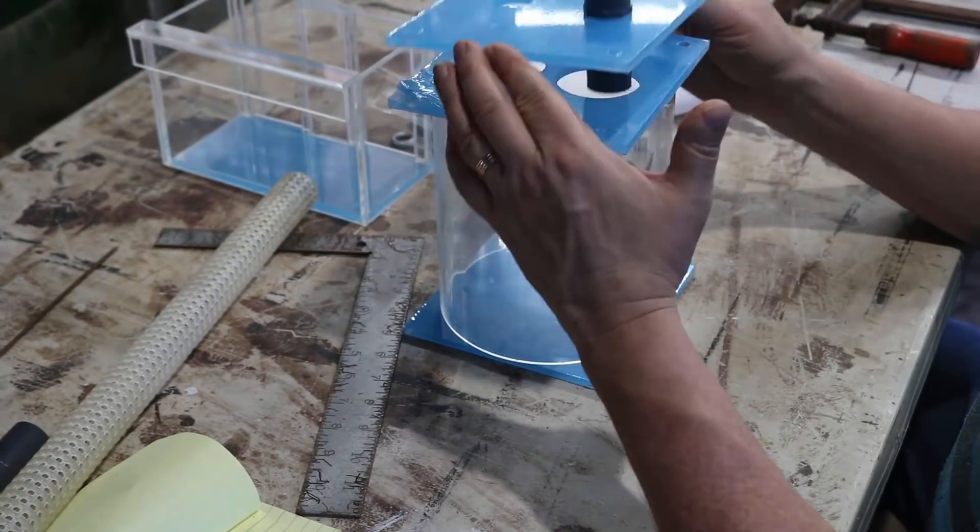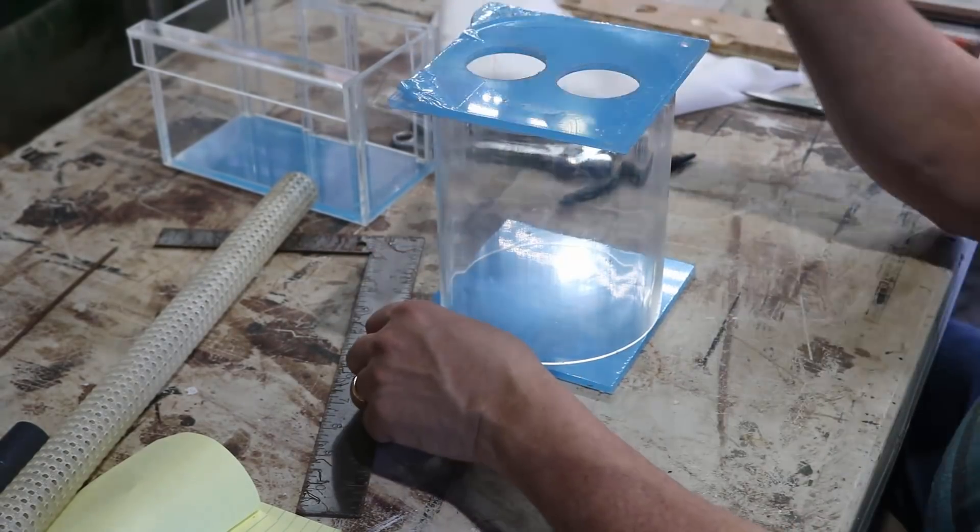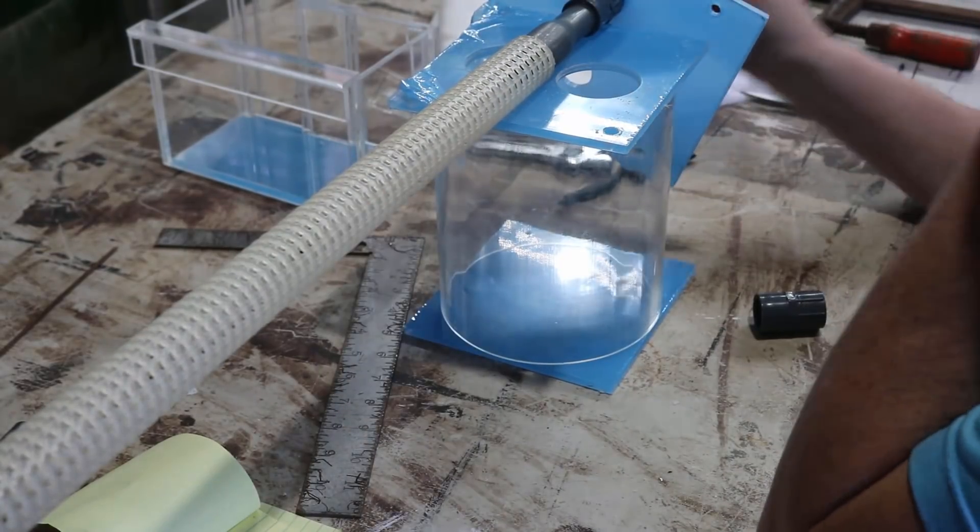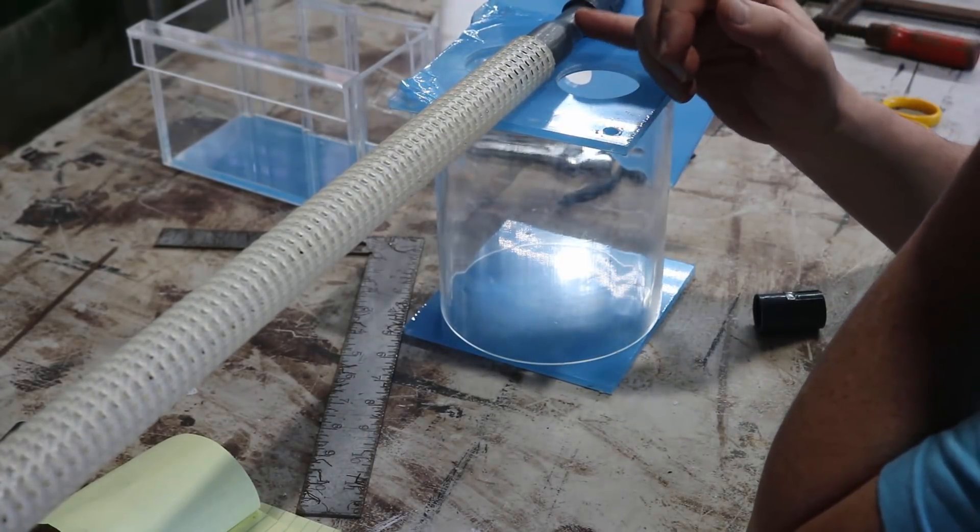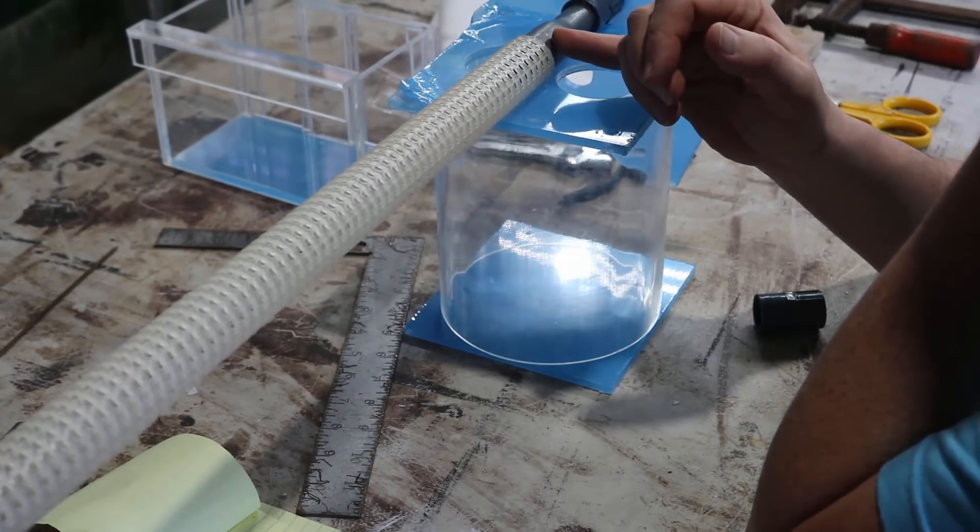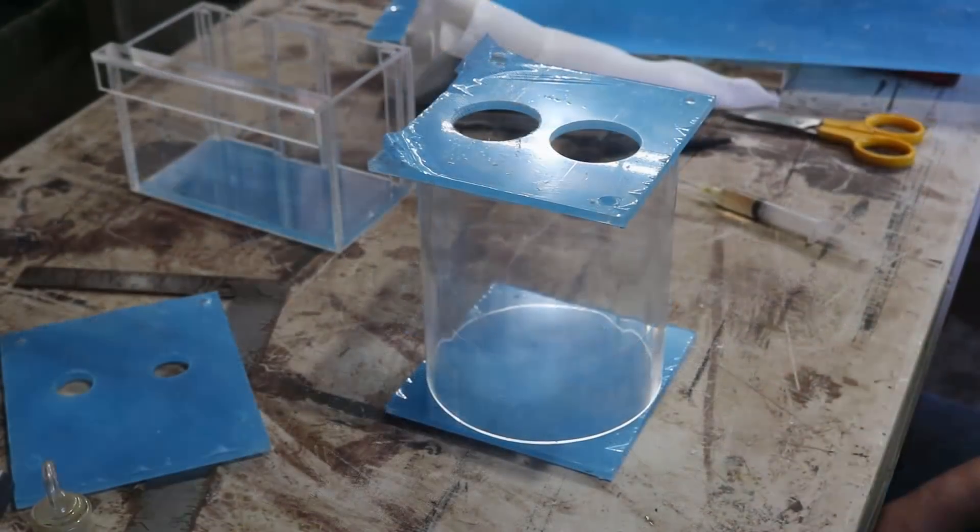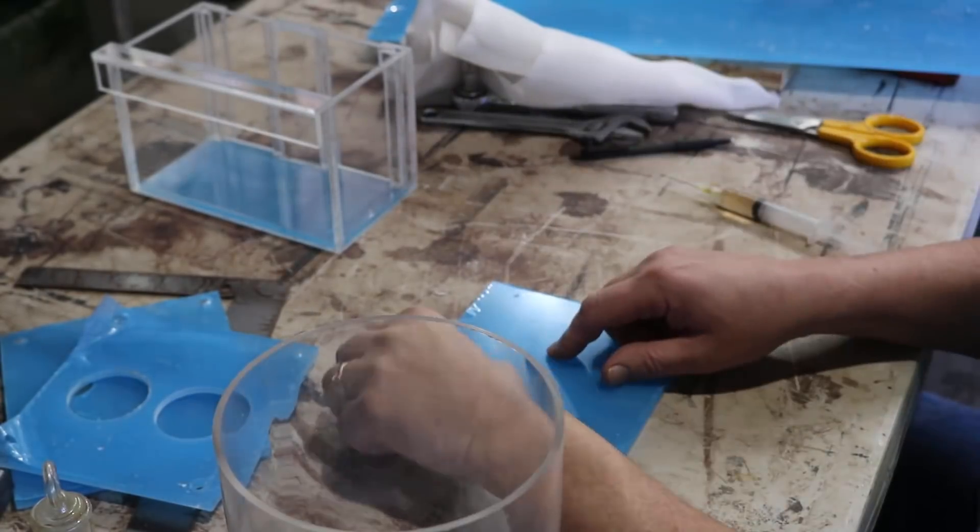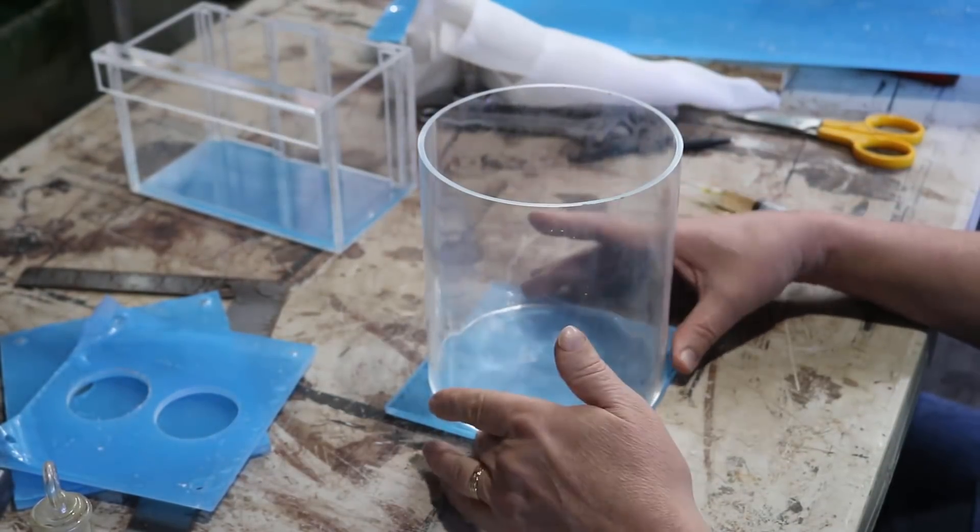This should actually start looking quite familiar to you, and that's because this is pretty much the same format for every canister filter out there. There's an input, there's an output, there's a chamber for where the media goes, and then there's some device that's going to keep the media from getting into the aquarium. And like I said, that's pretty much standard for all of them.